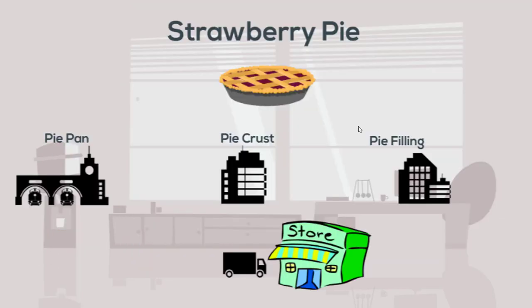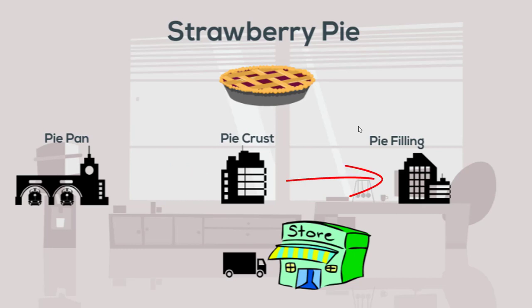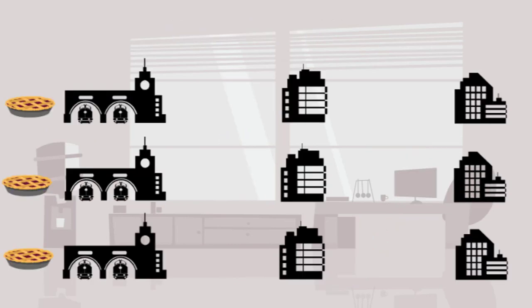Let's say you have a company that makes strawberry pies. You have a company that makes a pie pan, then that is sent to the company that makes a pie crust, then to the company that makes the pie filling, and then it is provided to a store for retail sale. Now suppose you are suddenly approached by a customer that wants two additional types of pie.